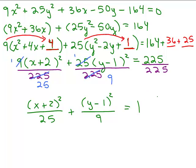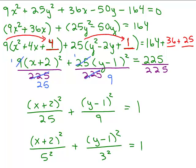So we've got the standard form. Now if you would like you can write this as 5² in the denominator and 3² in the denominator and those are just as correct. Okay, that's a correct way of writing it.